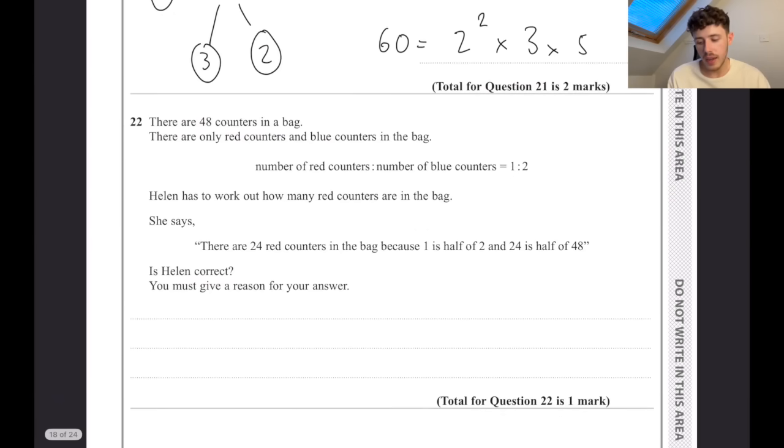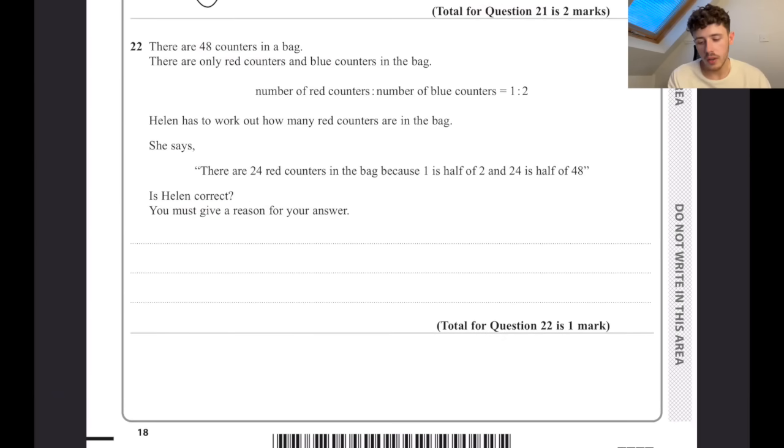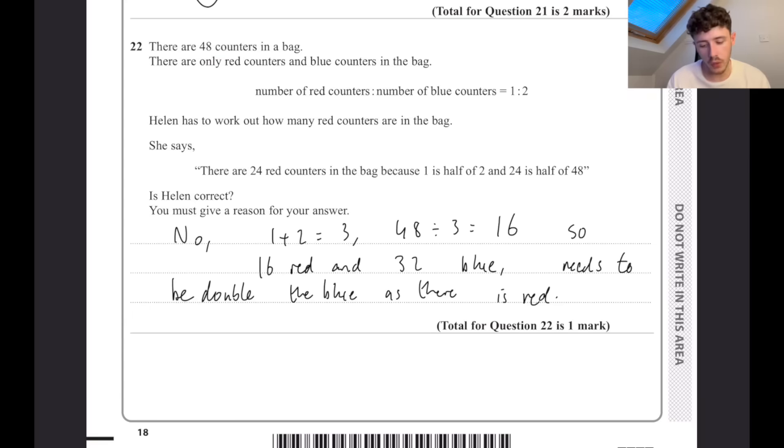There are 48 counters in a bag. There are only red and blue counters in the bag. Number of red to the number of blue is 1 to 2, so there's double the number of blue. Helen has to work out how many red counters are in the bag. She says there are 24 red counters because 1 is half of 2 and 24 is half of 48. That is not correct, because when we share a ratio, we add up the numbers first. A simpler answer would be if there was 24 red ones, you would also have 24 blue ones, which would be a 1 to 1 ratio, not 1 to 2.